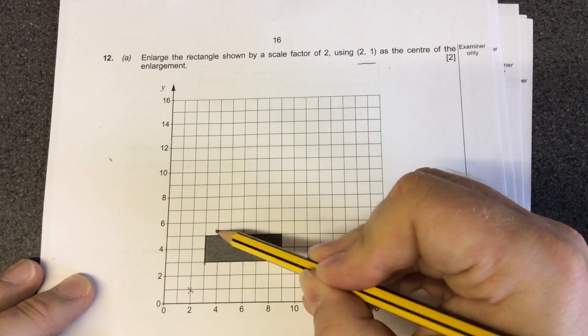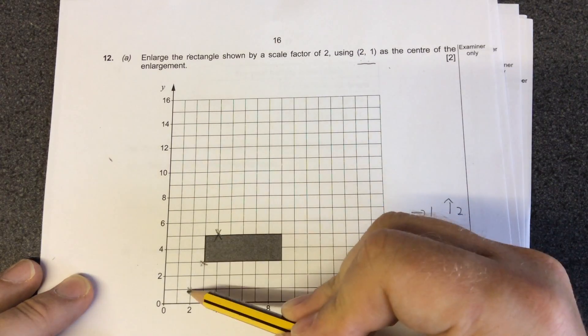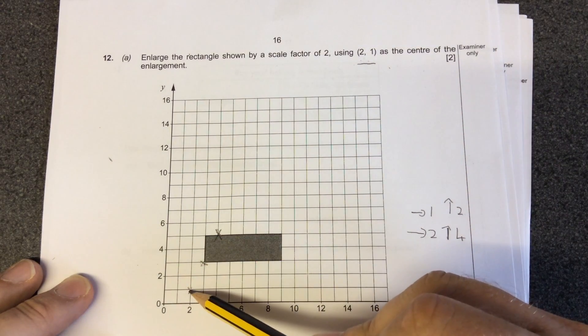1, 2, 3, 4. So that place, that corner point here, has moved there. It's double the distance away from the original center of enlargement.